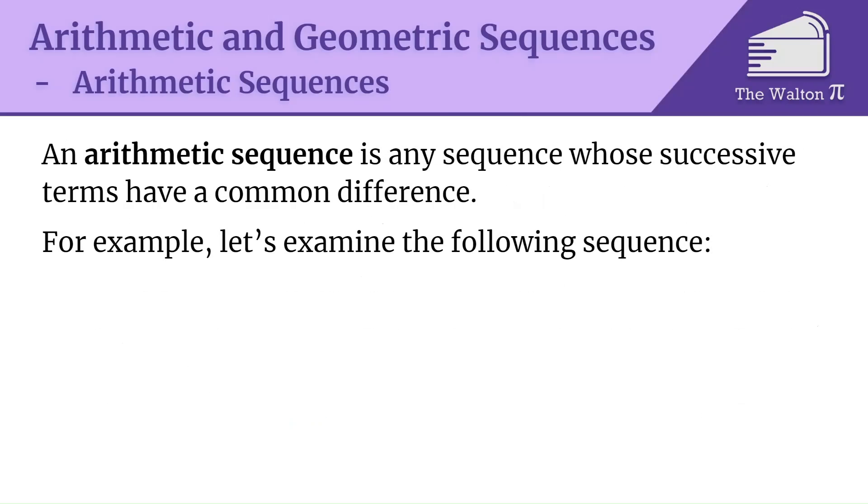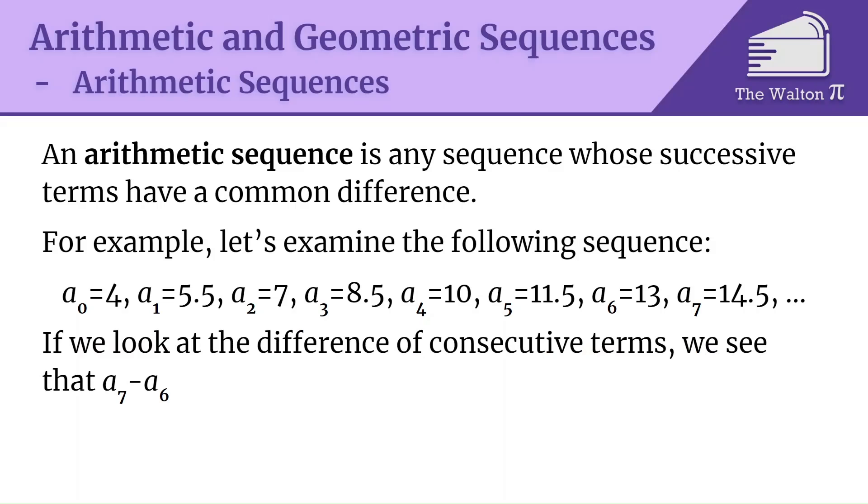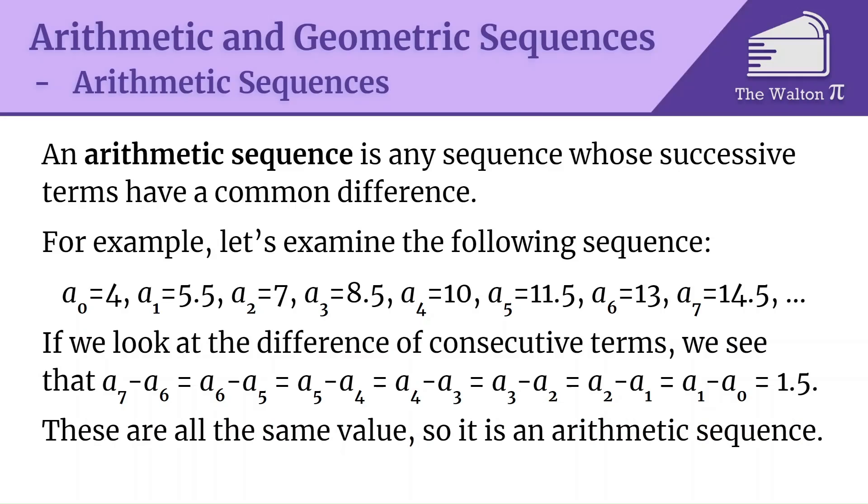For example, let's examine the following sequence: a0 is 4, a1 is 5.5, a2 is 7, a3 is 8.5, a4 is 10, a5 is 11.5, a6 is 13, a7 is 14.5. If we look at the difference of consecutive terms, we see that a7 minus a6 is the same as a6 minus a5, which is the same as a5 minus a4, and so on, which is 1.5. So all of these have the same common difference. Since they're the same value, this is going to be an arithmetic sequence.